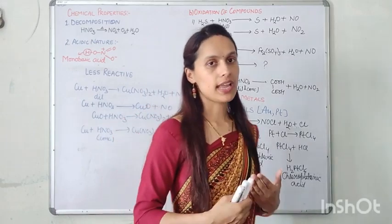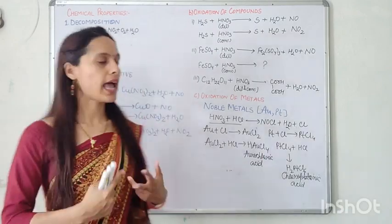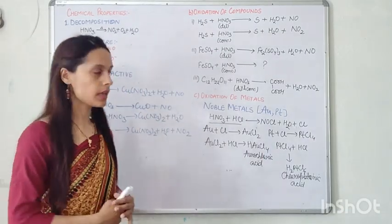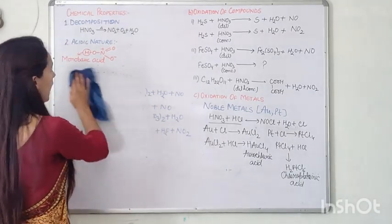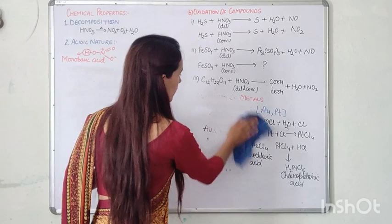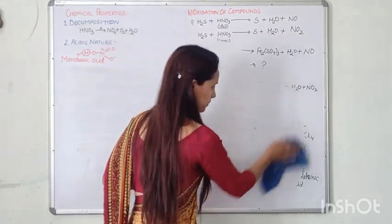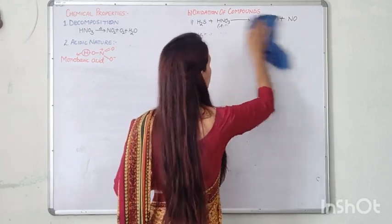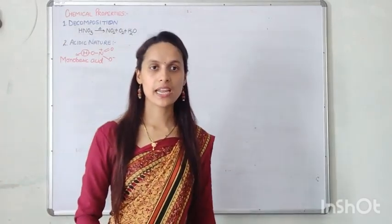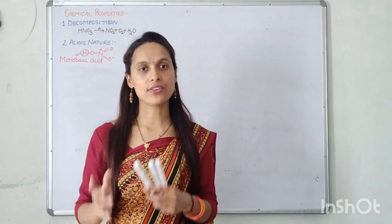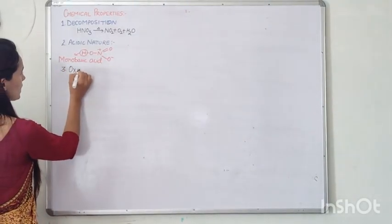So these are the oxidation reactions of metals: highly reactive, less reactive, and noble metals. Now we will study the next property: nitration. The mixture of concentrated HNO3 and concentrated H2SO4 acts as a nitrating agent. Concentrated H2SO4 helps in the formation of the electrophile of HNO3.